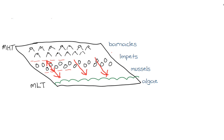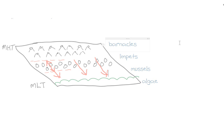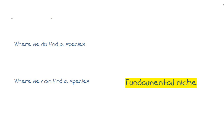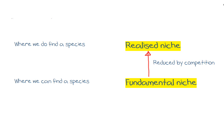Now this left biologists with a problem: what was the niche? Was it the original distribution or was it the final distribution? This could be rephrased as where we do find a species, or where we can find a species. These have been given names. Where we can find a species is called a fundamental niche, while where we do find a species is called a realized niche. The difference between these is that the fundamental niche is reduced in size by competition.